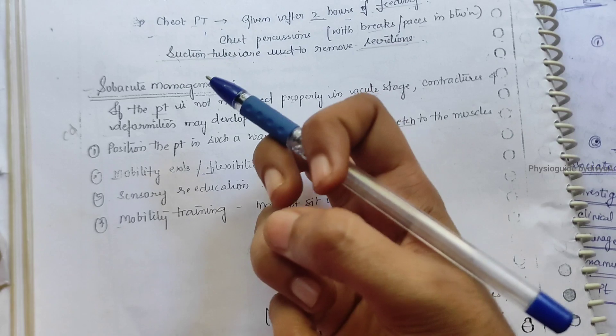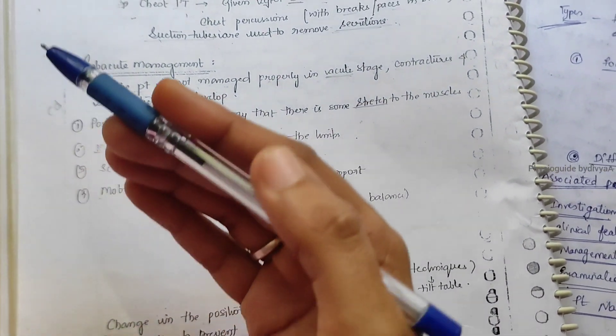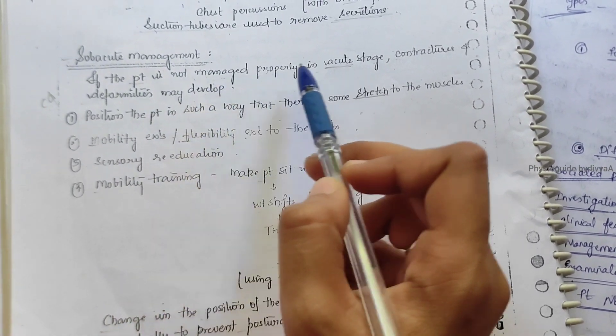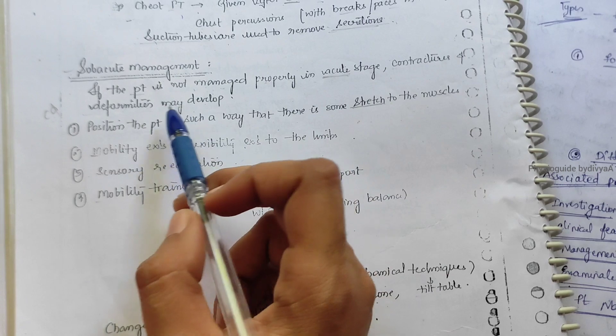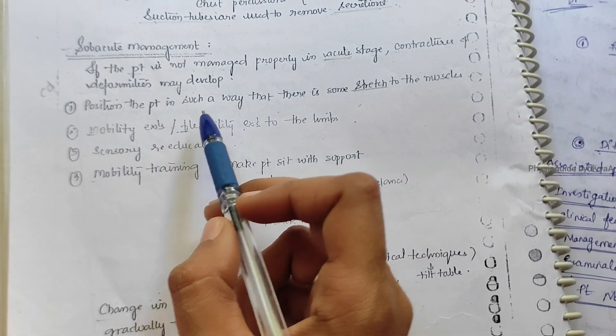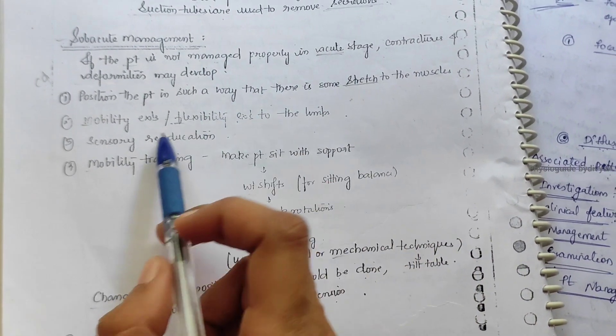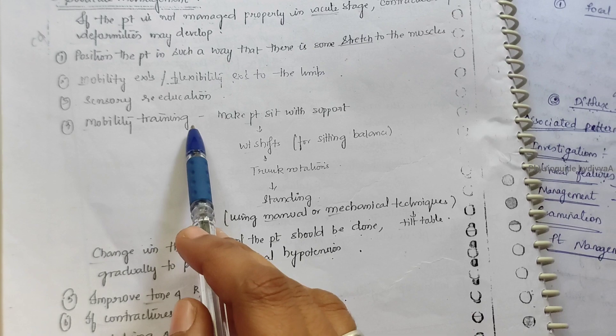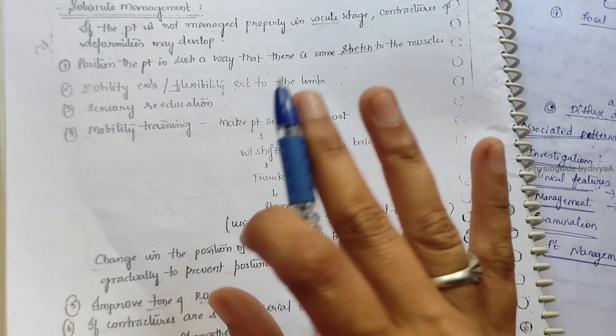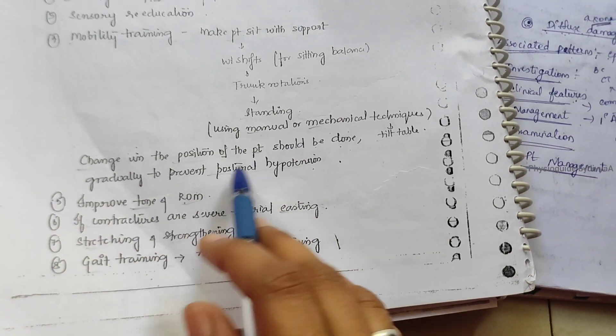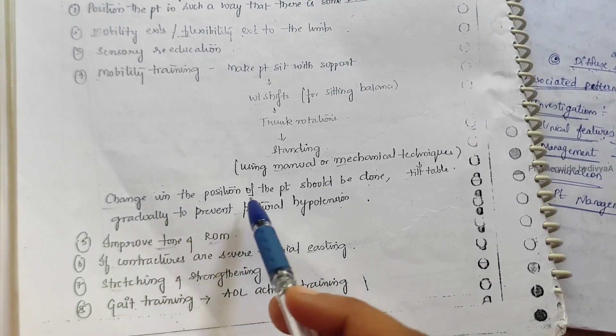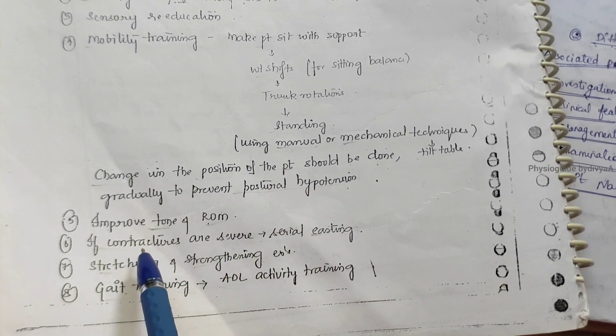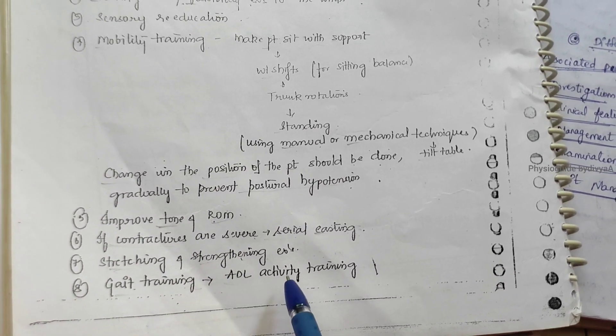Sub-acute management - if the patient is not managed properly in acute stage, contractures and deformities may develop. Position the patient to avoid muscle stretch. Maintain mobility and flexibility exercises, sensory re-education, and mobility training. Make patients sit with support, practice weight shifting from one side to other, trunk rotation, and standing with manual or mechanical support. Change position gradually to prevent postural hypotension. Improve tone and ROM with stretching and strengthening exercises, gait training, and ADL activities.